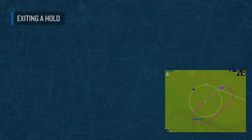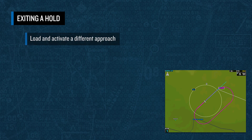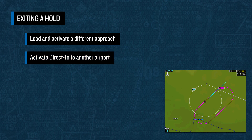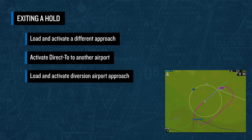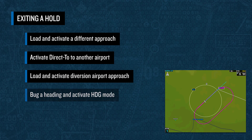There are several methods for exiting a hold once a new plan has been devised and communicated to ATC. You could load and activate a different approach to the current destination, select to go direct to another airport, or load and activate an approach for another airport. Or, you could simply bug a heading and then select heading mode.